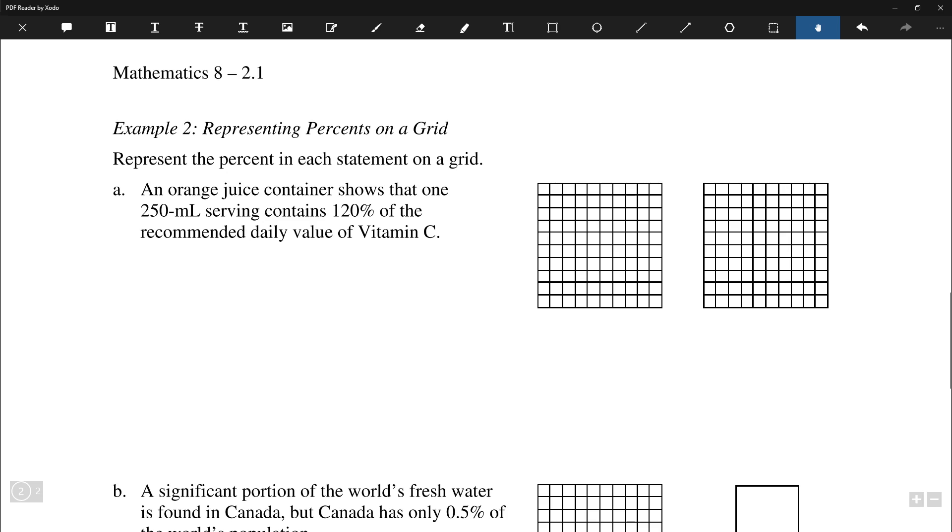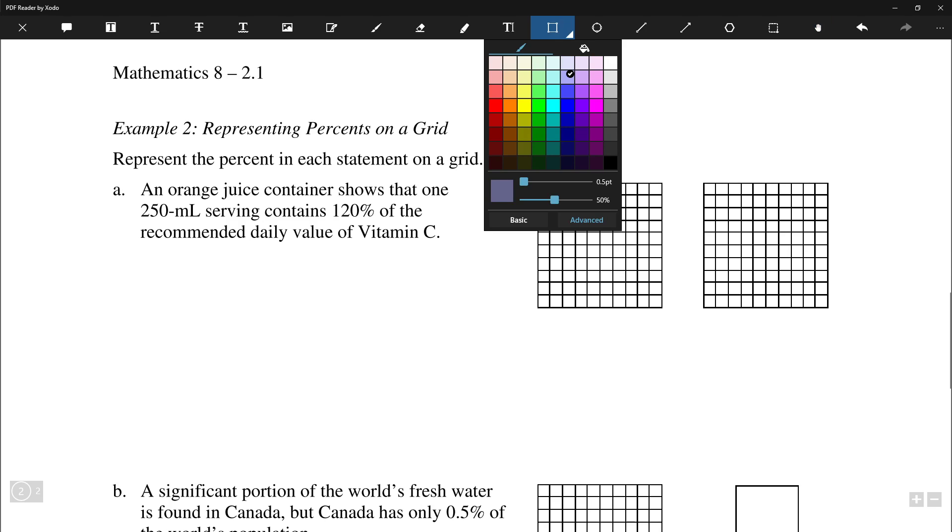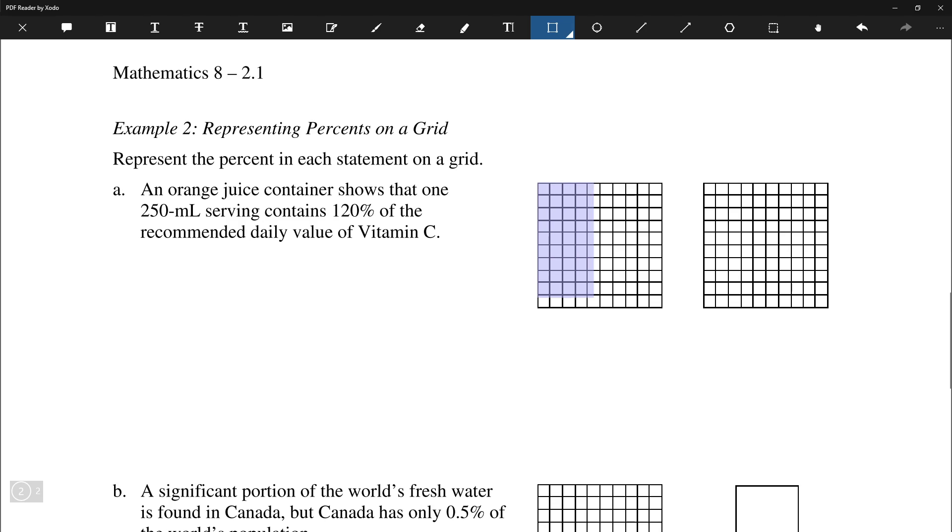Representing percent in each statement in the grid. So orange juice container shows that one 250 milliliter serving contains 120% of the daily recommended value of vitamin C. So simply put, this is what it looks like in a diagram. We have one completed grid and then 20% more. So that's 100% on the left and 20% more on the right. So for a total of 120%.